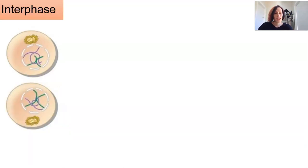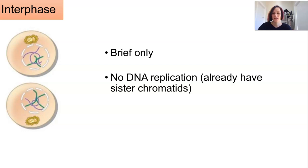There's a really brief interphase between the first and second stage of meiosis but the difference here is that there's no DNA replication because even though we only have one of each of the homologous pairs, it's already got sister chromatids. No DNA replication can happen.